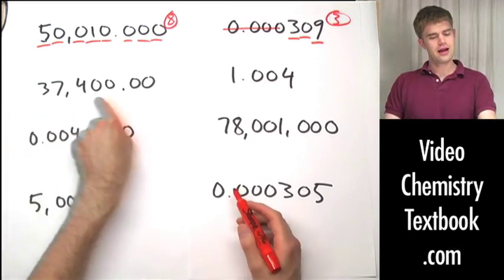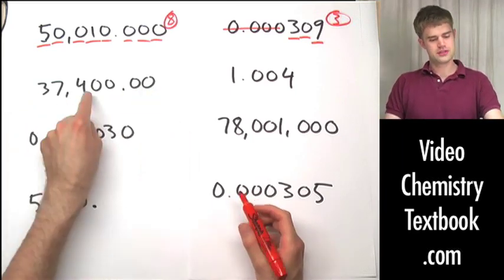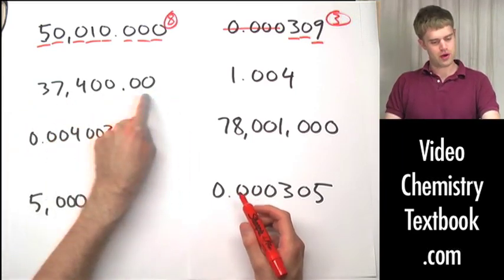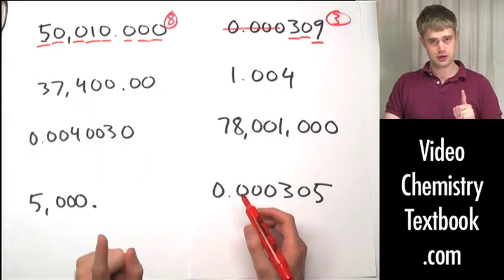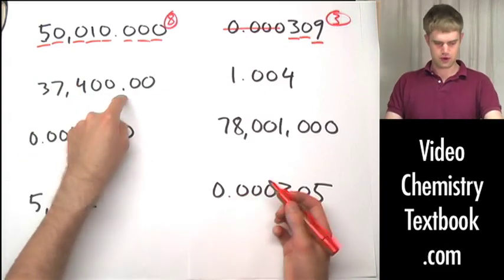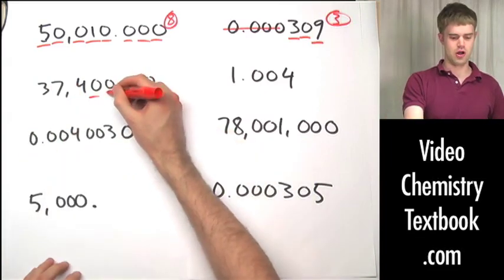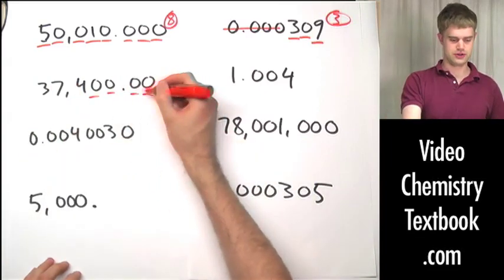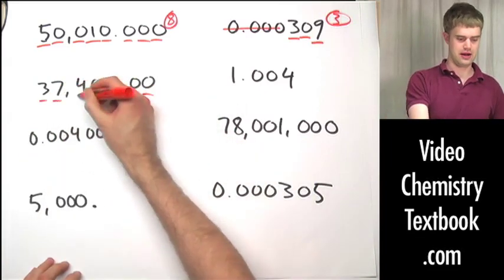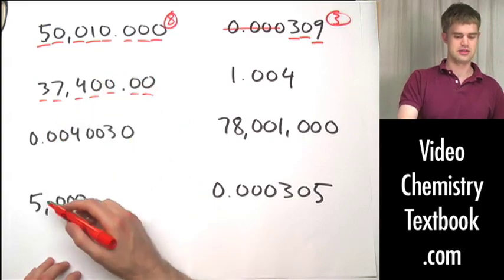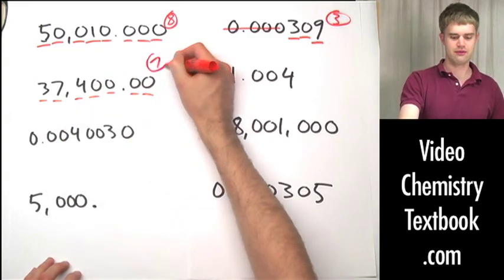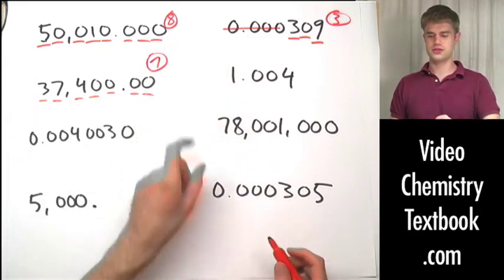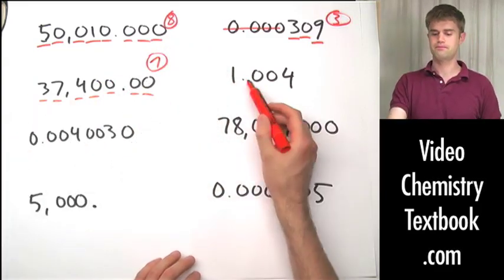Here we have a number with zeros coming to the right of non-zero digits. Is there a decimal point? Yes, there is, which means that all of these zeros are significant. And obviously the non-zero digits are too, which means we have seven total significant figures here.